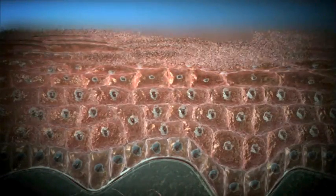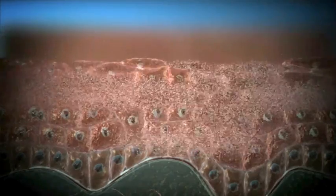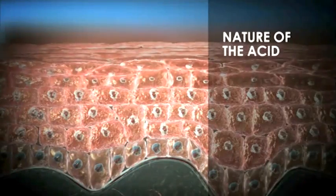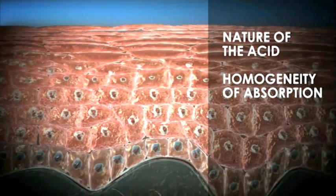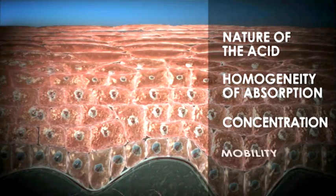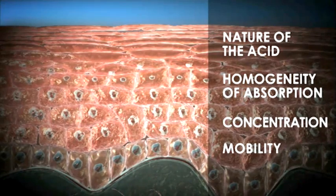The process of chemoexfoliation induced by an acid causes a controlled insult to the skin, together with the removal of old cells and fibrous structures. As a result, the epidermis is renewed and the dermal microarchitecture is remodeled. This effect mainly depends on the nature of the acid, the homogeneity of its absorption, the concentration of protons, and their mobility within the aqueous component of the skin.